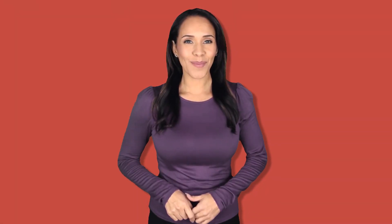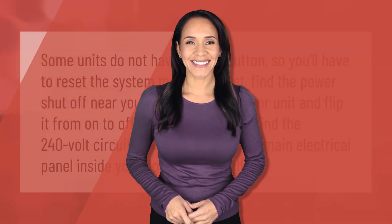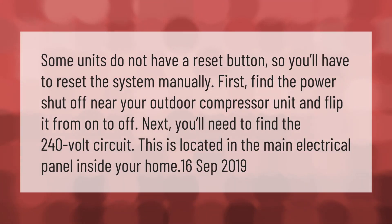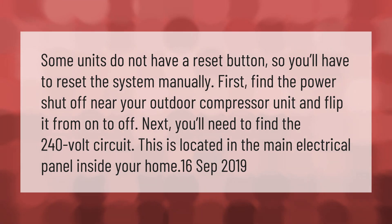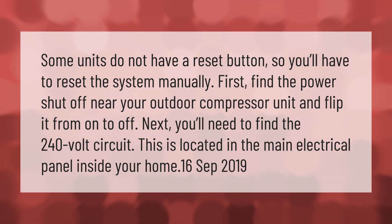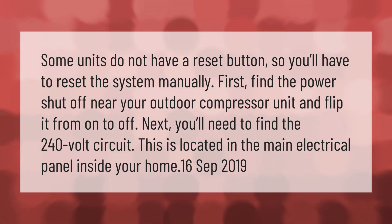Some units do not have a reset button, so you'll have to reset the system manually. First, find the power shutoff near your outdoor compressor unit and flip it from on to off. Next, find the 240-volt circuit, which is located in the main electrical panel inside your home.